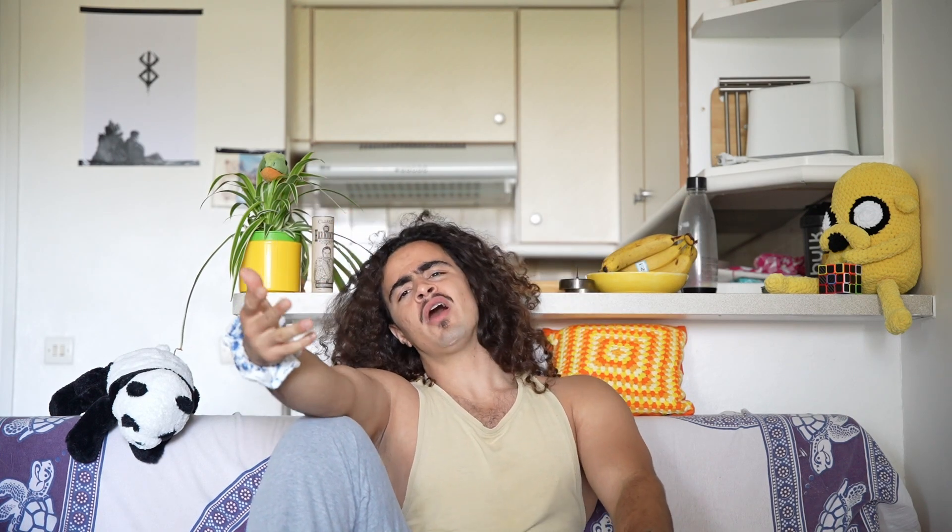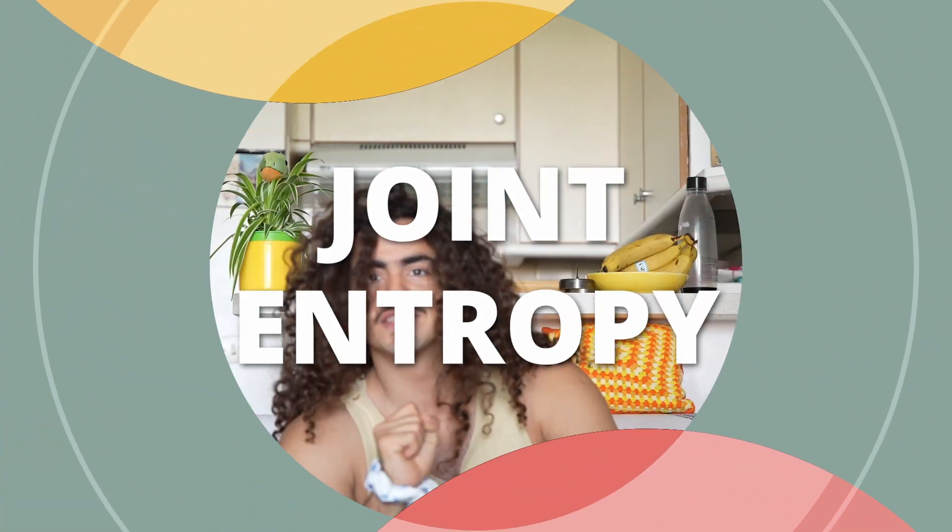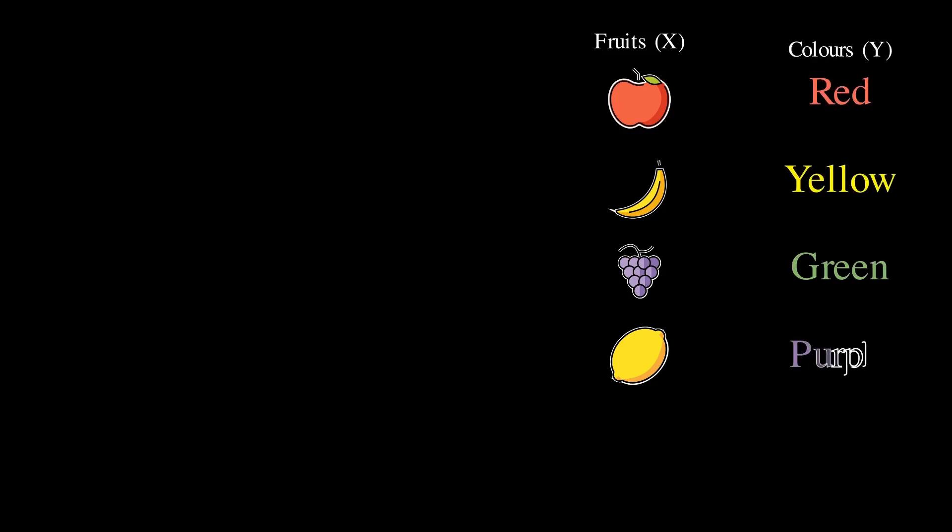Now so far we've been talking about how much uncertainty there is in one variable. But what if you're trying to guess two things at once? That is where joint entropy comes in. Let's say you're trying to figure out both a fruit and its color. You've got these possibilities. The fruits could be either apple, banana, grape, or lemon. The colors are red, yellow, green, and purple.